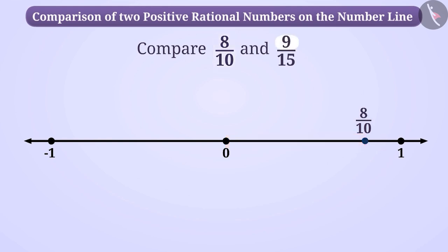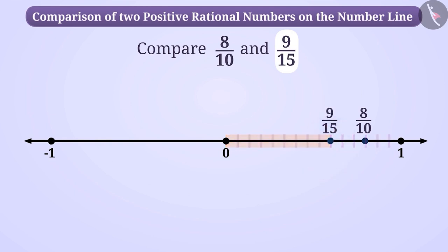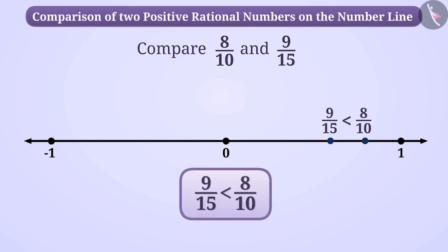Similarly, in 9/15, the numerator 9 is smaller than the denominator 15. Therefore, the position of 9/15 will also be in between 0 and 1. To find its position, we will divide the distance between 0 and 1 into 15 equal parts and by taking out 9 parts, we express it as 9/15. Now we can see that 8/10 is to the right of 9/15. Therefore, 8/10 is greater than 9/15.